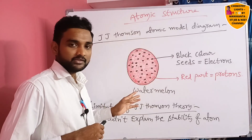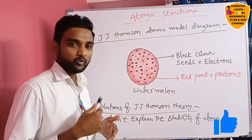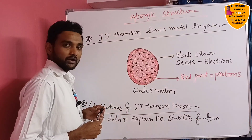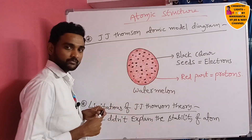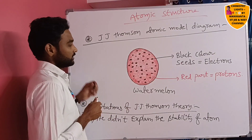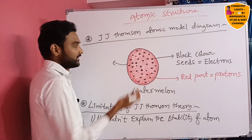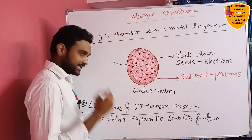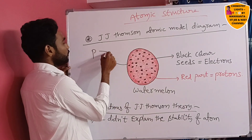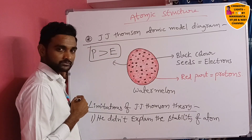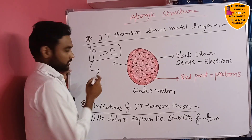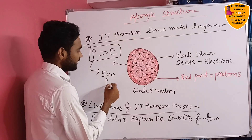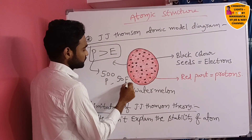Now let me discuss the limitations of J.J. Thompson's theory. The main drawback is that he was unable to explain the stability of the atom. He said electrons are embedded in the atom like black seeds in a watermelon, and the red part represents protons — meaning protons are greater in number than electrons. So imagine there are 500 protons and only 50 electrons.